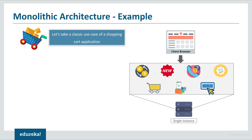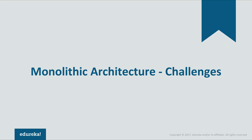Let's understand more about monolithic architecture using a shopping cart application as reference. As a user, when you open a shopping cart application, you see different features for handling wish lists, new labels, new brands in the markets, customer services and so on. But if the developers had decided to build this application on a single framework, then all the features were put together on a single database — which created problems for scalability, fault tolerance, and agility.